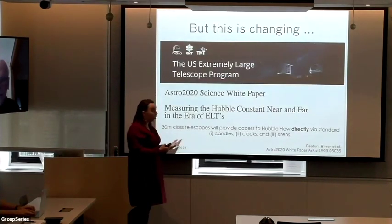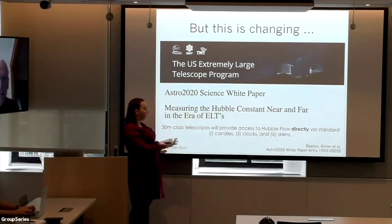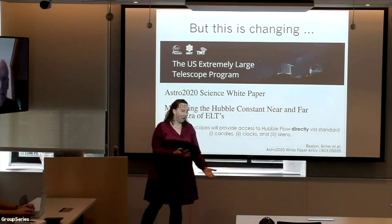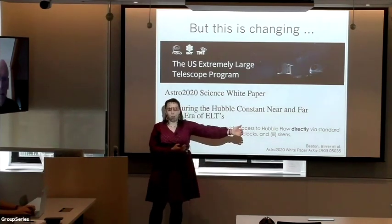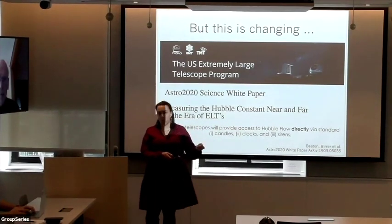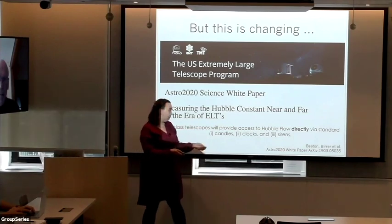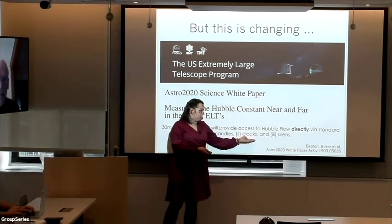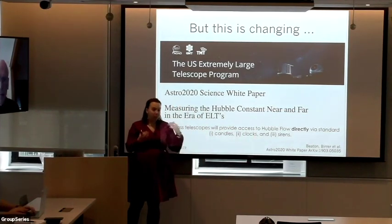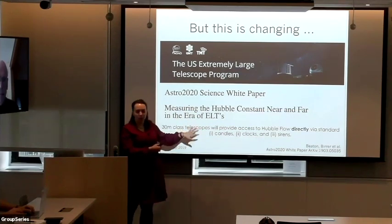This will change with the advent of 30-meter class telescopes. A group of us envisioned measuring the Hubble constant with a 30-meter class telescope in the Decadal White Paper survey. Distances well into the Hubble flow will be accessible from the ground—you can do a stellar population distance at 100 megaparsecs in one to two hours of integration. You can also use gravitational time delay lensing and gravitational wave sources to measure the Hubble constant.